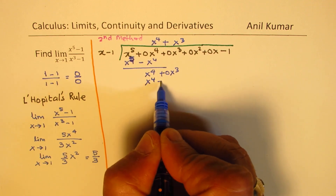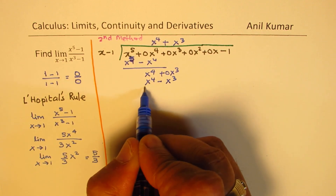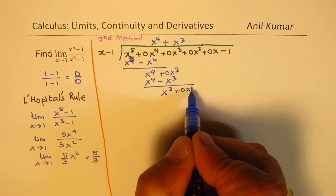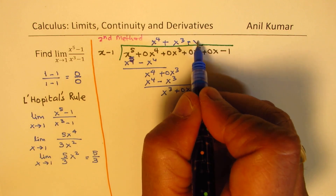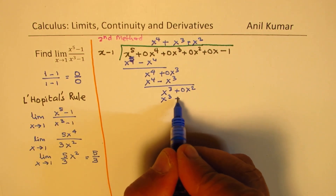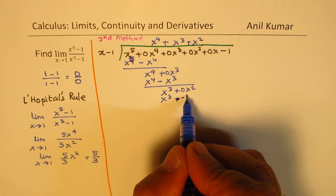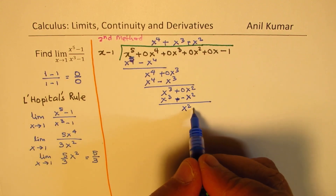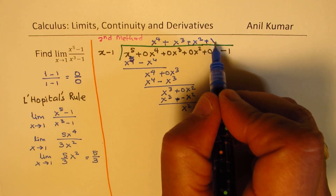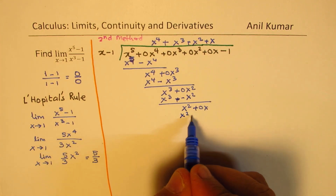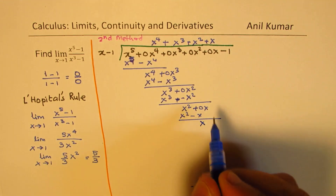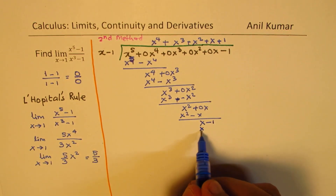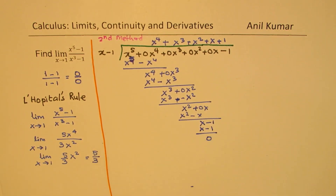Now multiply by x cubed, giving x to the power of 4 minus x cubed, and when you subtract you get x cubed. Bring down 0x squared, multiply by x squared giving x cubed minus x squared. When you subtract it becomes x squared. Bring down 0x, multiply by x giving x squared minus x, so that gives you x minus 1, and finally plus 1 will give us x minus 1, as expected. Remainder is 0.